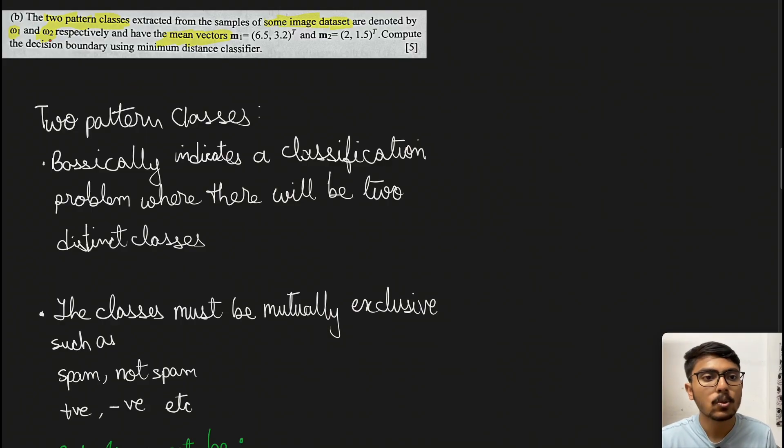We're given two pattern classes extracted from samples of one image dataset, denoted by omega 1 and omega 2, with mean vectors m1 = (6.5, 3.2) transpose and m2 = (2, 1.5) transpose. Compute the decision boundary using minimum distance classifier. There are many technical terms we'll go through one by one.